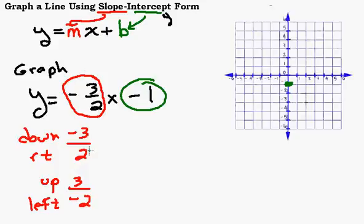So if I do down 3, right 2 from my y-intercept, down 3, right 2. Be right there. If I did up 3, left 2 from my y-intercept, up 3, left 2. It would be right there. So it wouldn't matter. It would be the same line.